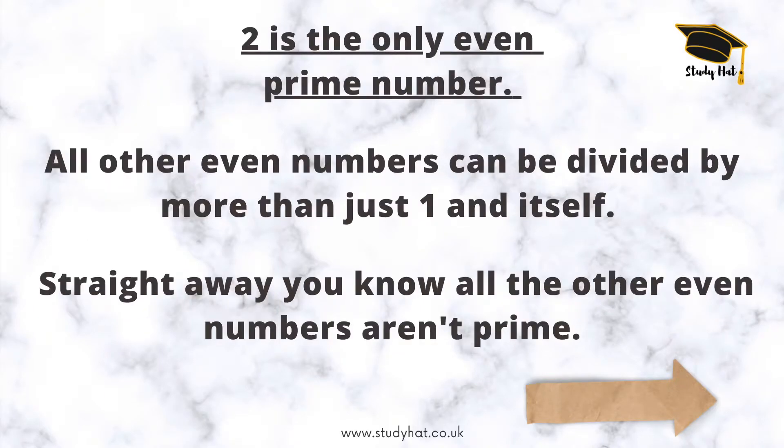Firstly, the number two is the only even prime number. Every other even number can be divided by more than just one or itself. So all you need to remember is: if a number is bigger than two and it's even, then it's not prime. That's it — very simple.